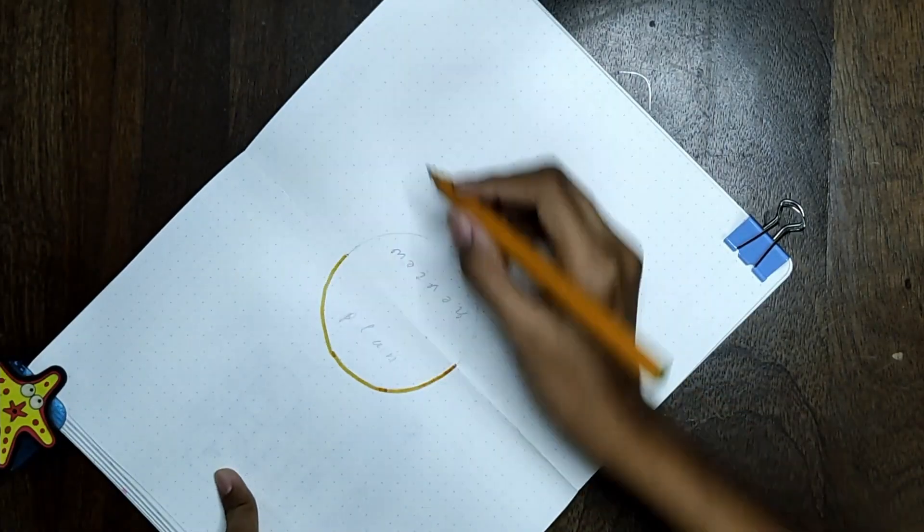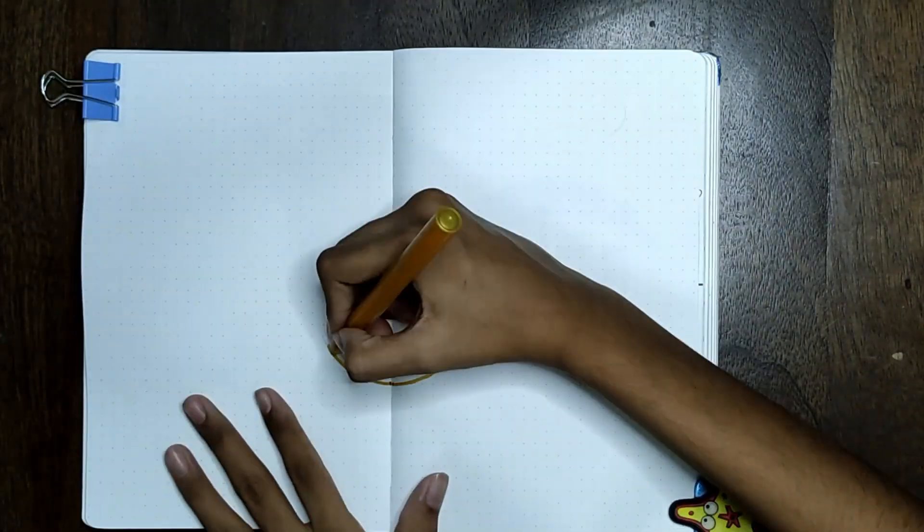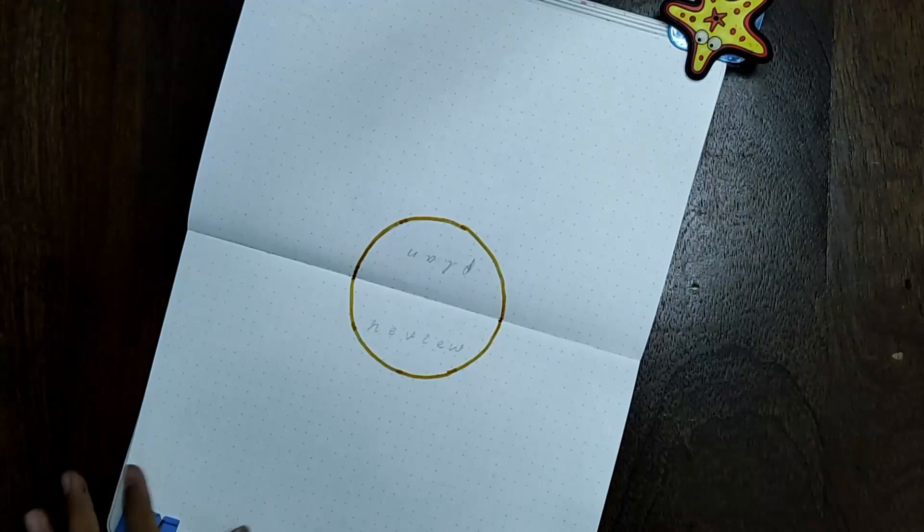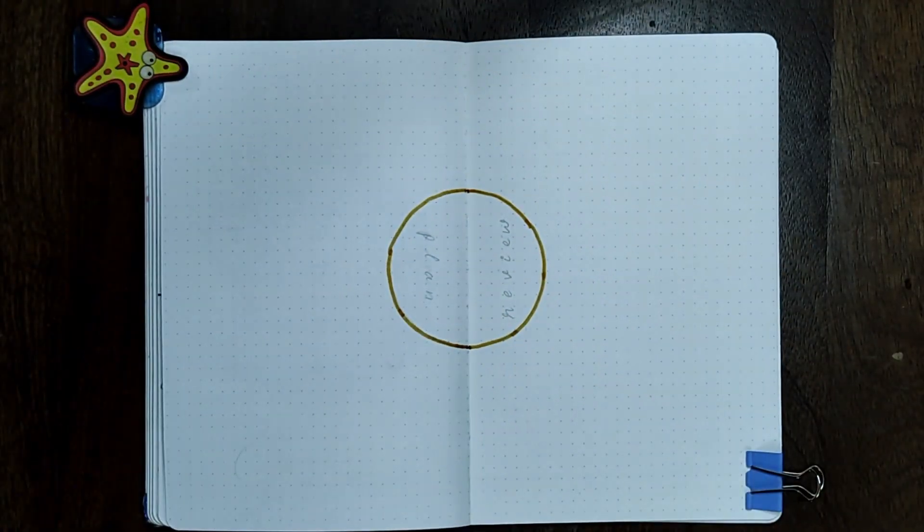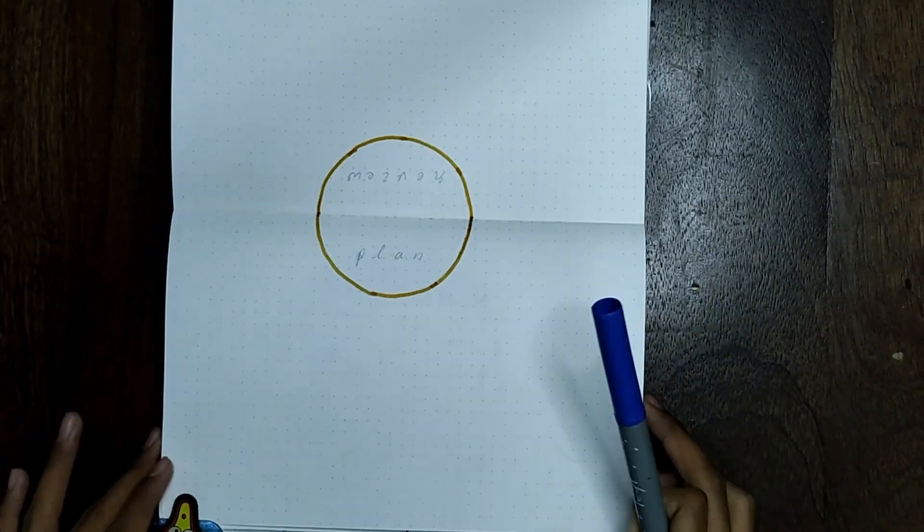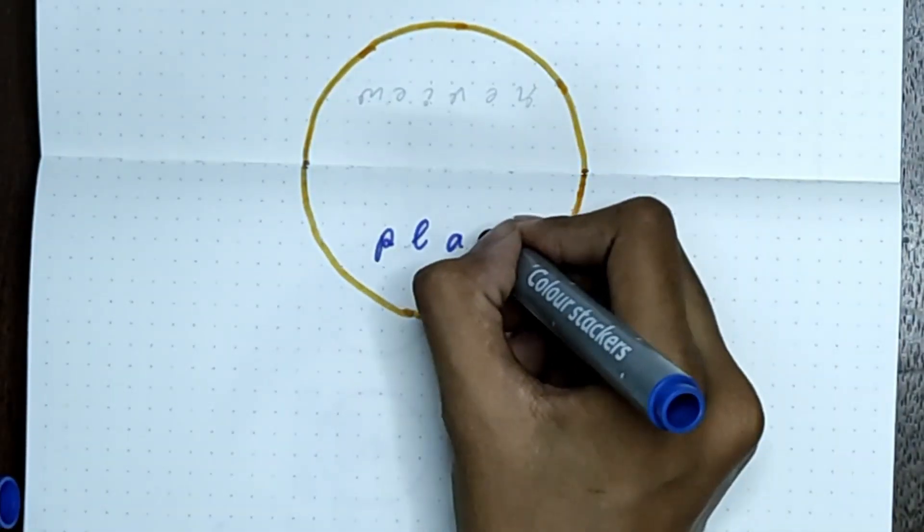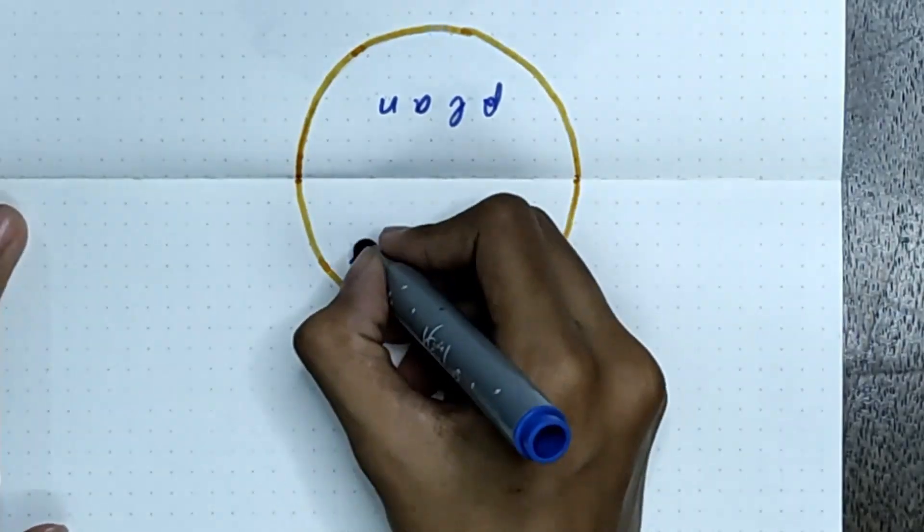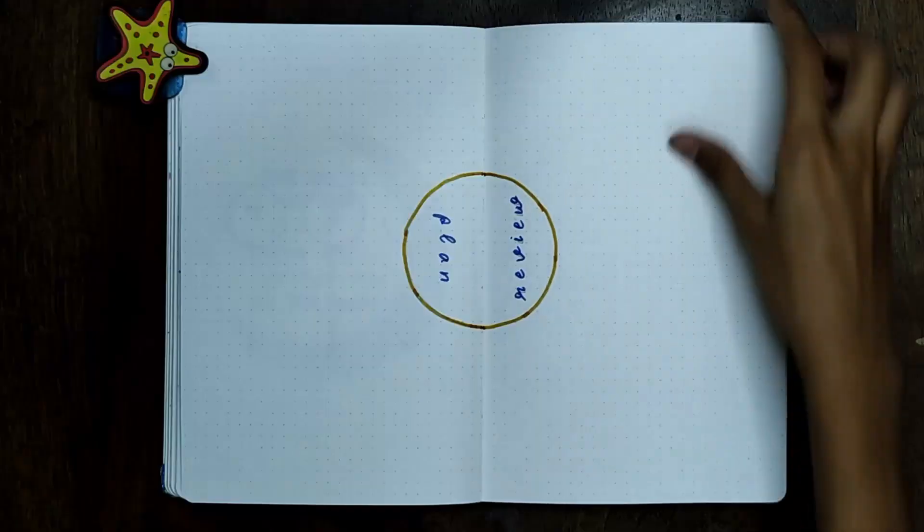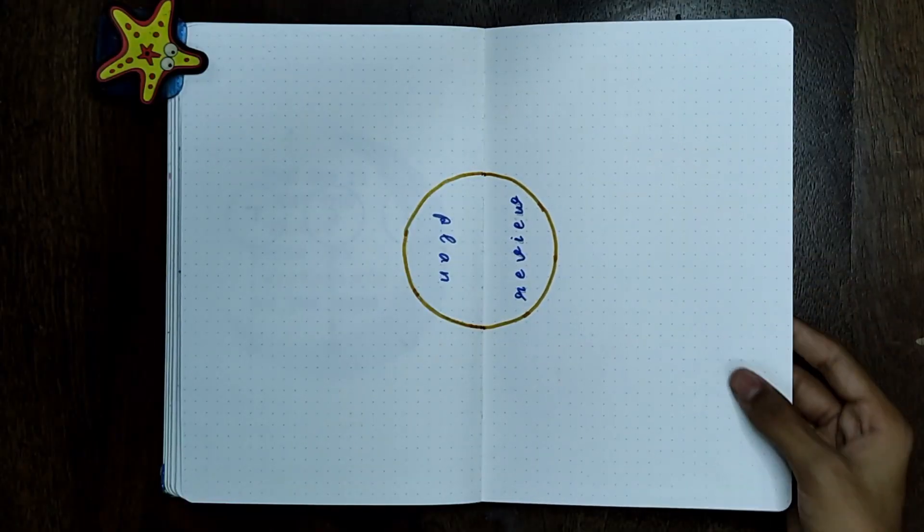For this, again making it really simple, I drew a circle at the middle of the page and then I'm just writing 'plan' and 'review' using a blue pen. So for the colors that I chose for this month, I just chose two colors—that is blue and golden—and then I'm also using silver for the moon here and there. So blue, silver, and golden, that's it.